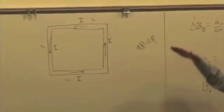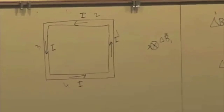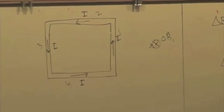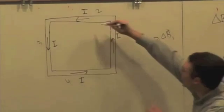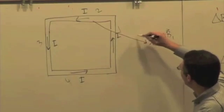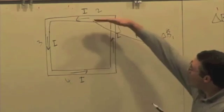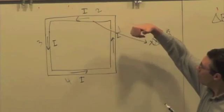What about the field due to the top segment? What's that direction going to be? That's actually going to be outward, isn't it? Because if I draw an R vector from here to here, I have I cross R, thumb points out.